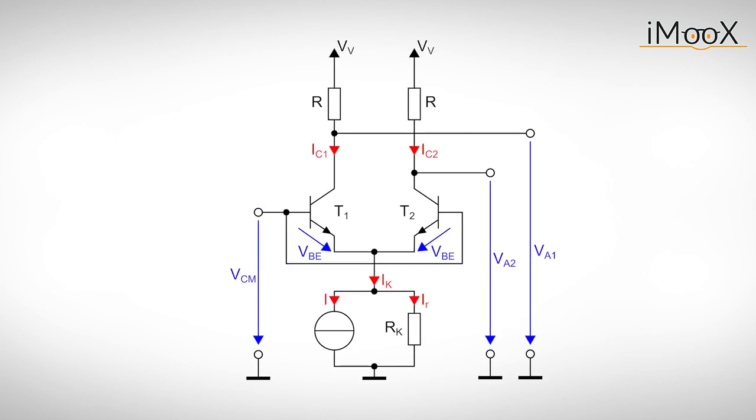The influence of the common mode voltage VCM is determined in a similar fashion. We assume that the potential at the emitters changes accordingly to the common mode input voltage. This change in voltage causes a change in current through the internal resistance of the current source.